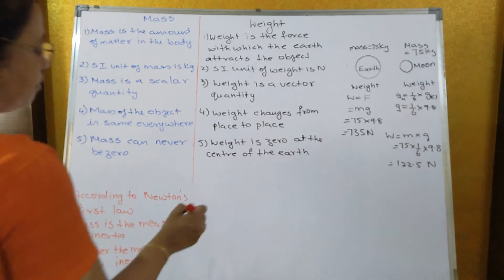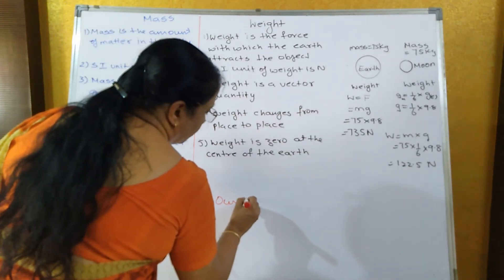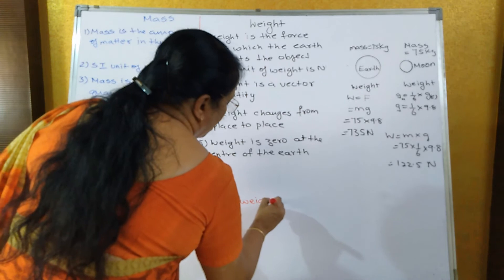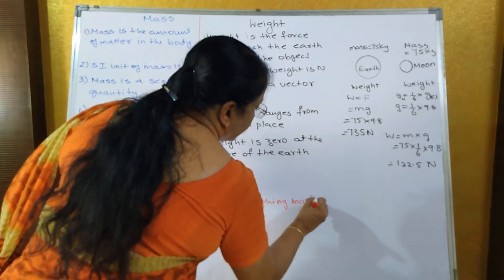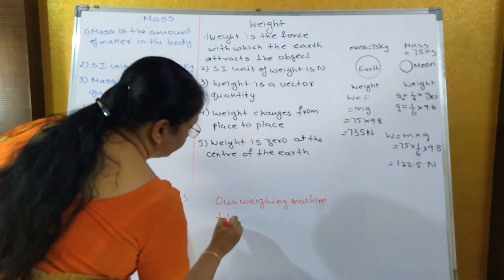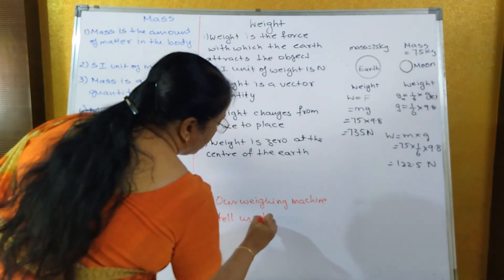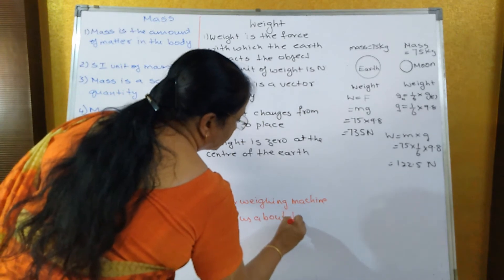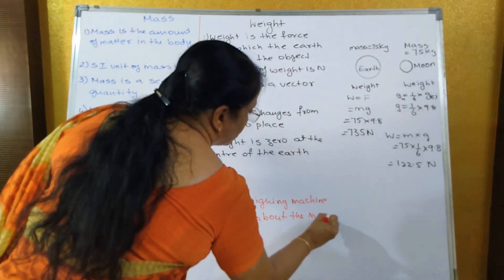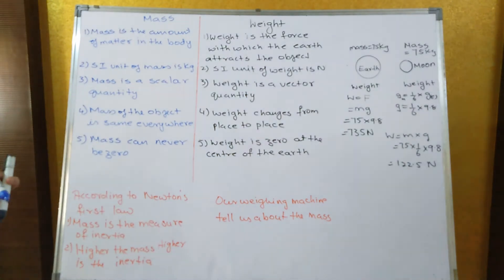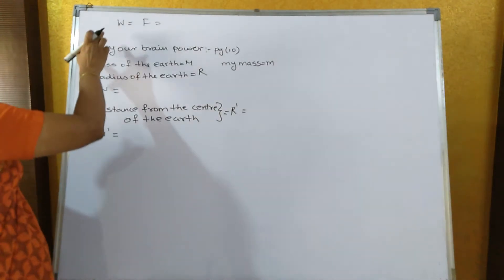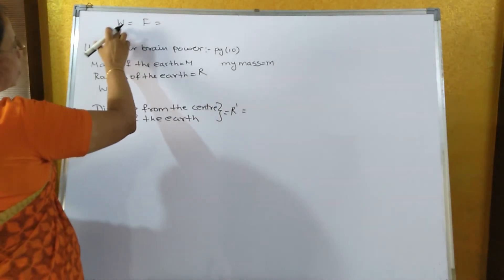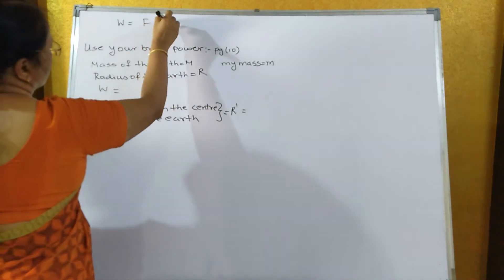Our weighing machine tells us about the mass, not about the weight. When we stand on a weighing machine it tells us the mass. The value of weight (w) is equivalent to force — w equals mg.